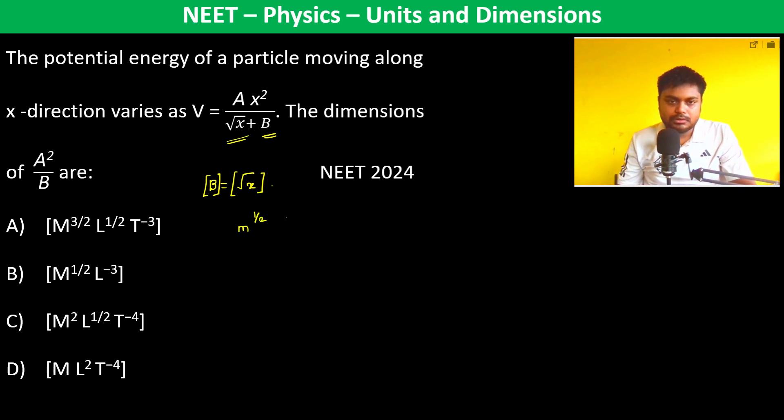Now, this is potential energy. Therefore, joule equals A times x, where x is in meters. Why is x in meters? Because it is written that the particle is moving along the x direction.